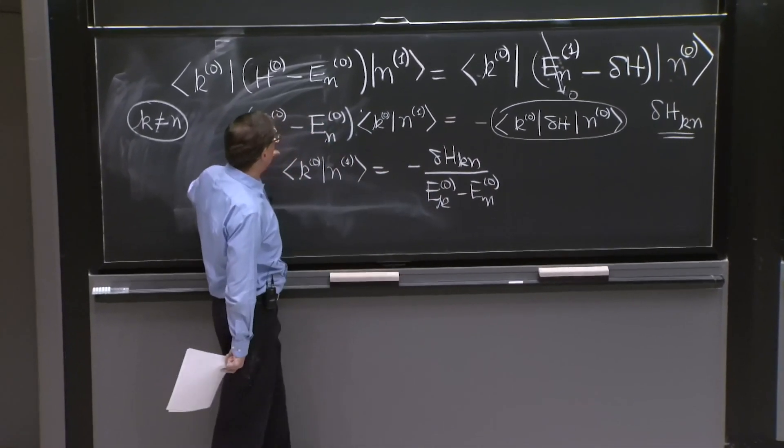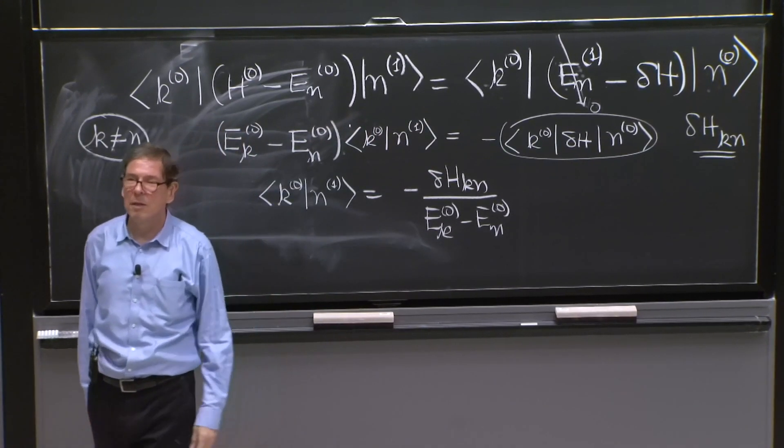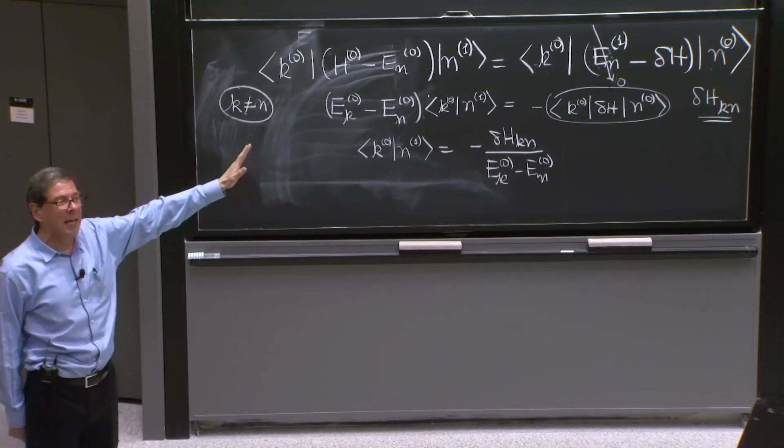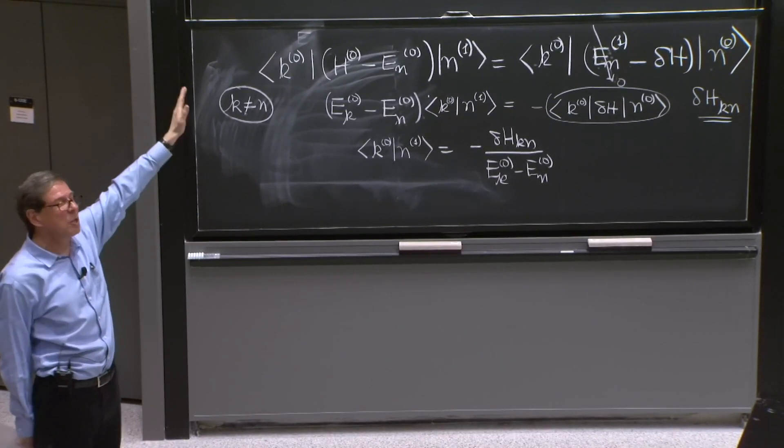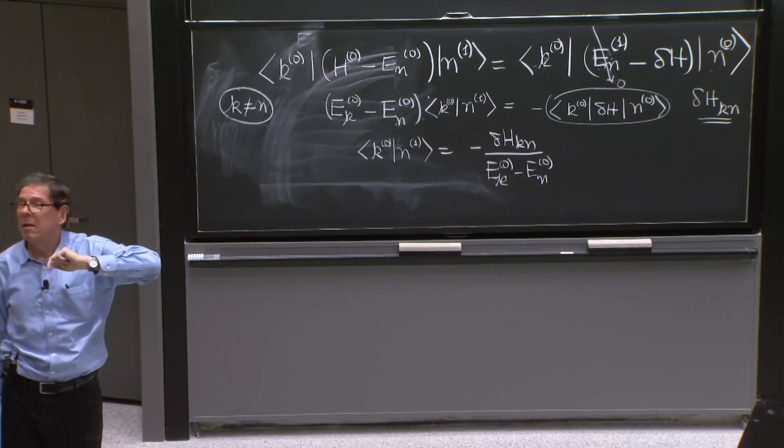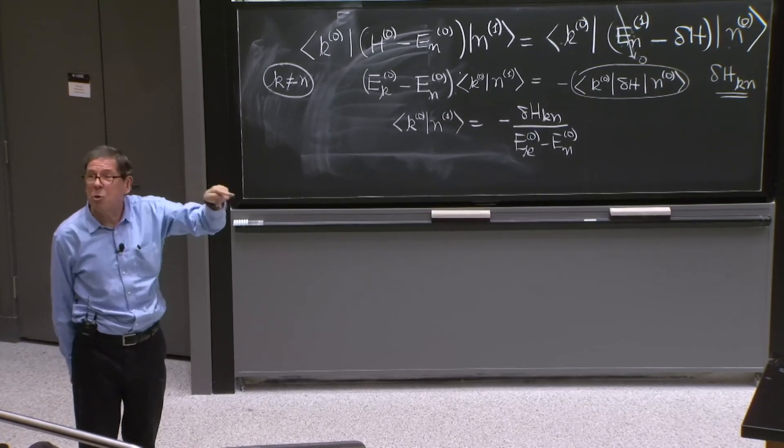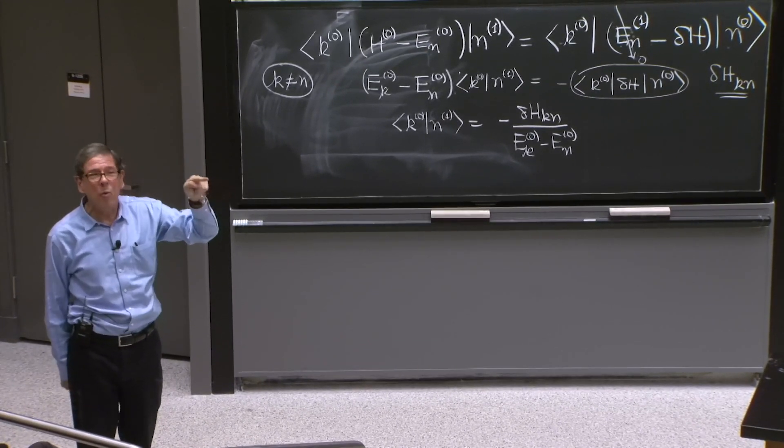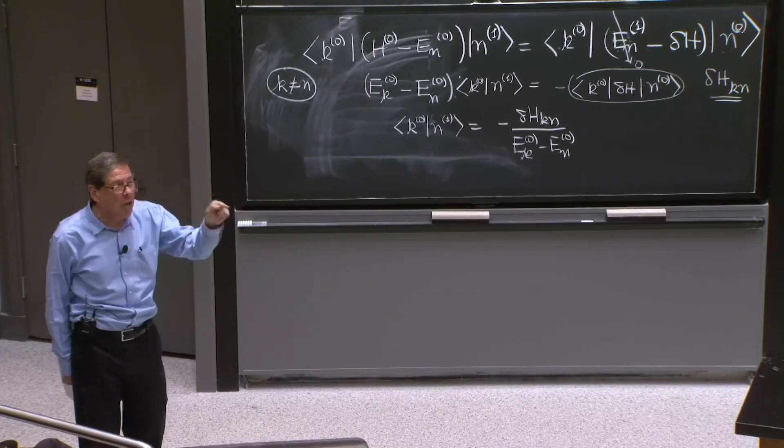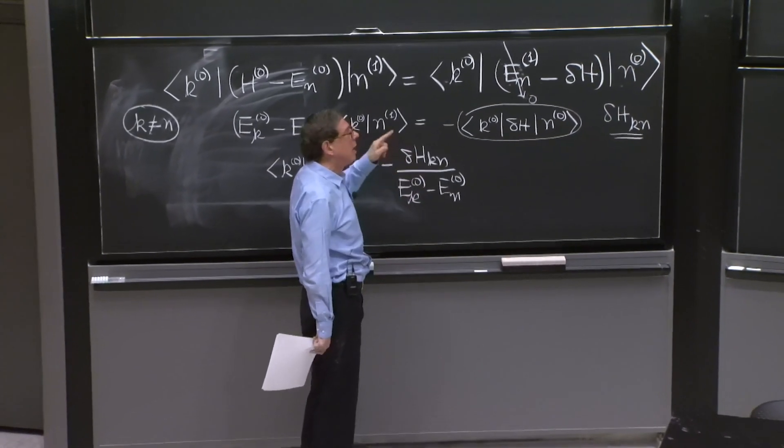And this is unsolvable for this component. So you start getting difficulties if you have degeneracies. As long as every k state, all the other states of the spectrum, have different energy from E_n—never mind if the other states are degenerate, they're not degenerate with the state you care. You care just about one state now, the nth state. And if that's non-degenerate, all these denominators are non-zero, and you're okay.